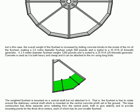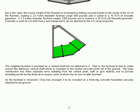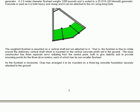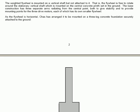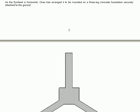Concrete is used because it is both heavy and cheap and can be attached to the inside of the rim using long bolts. The weighted flywheel is mounted on a vertical shaft but not attached to it. That is, the flywheel is free to rotate around the stationary vertical shaft which is mounted on the central concrete plinth set in the ground. The base construction has three separate arms radiating from the central point both to give stability and to provide mounting points for the three drive motors, each of which has its own smaller flywheel. As the flywheel is horizontal, Chas has arranged it to be mounted on a three-leg concrete foundation securely attached to the ground.